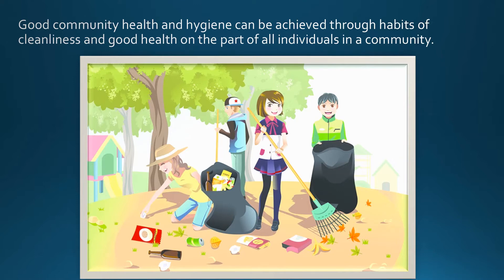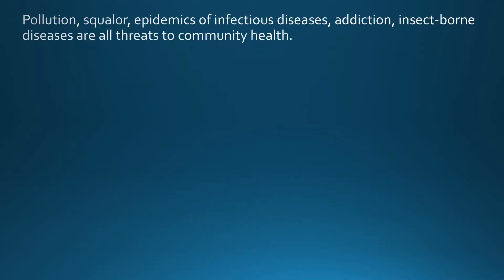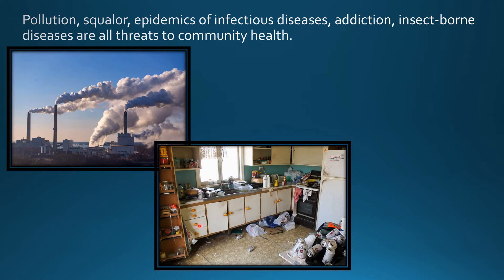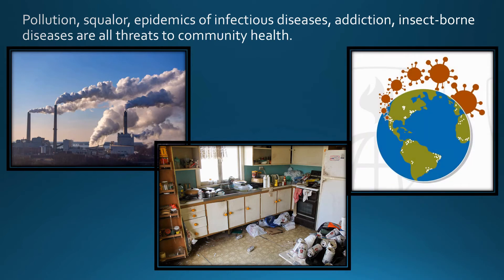People should get together to keep their community and area clean so that they can be away from disease. Pollution, epidemics of infection, addiction, and insect-borne diseases are threats to the community. There are various types of pollution like air, water, and soil pollution. Squalor is untidiness or having a very dirty home, so you should keep yourself clean and organize your home neatly. Epidemics are diseases that spread in certain areas and we should stop them from spreading further. To nurture community health is to protect the general public from such diseases and make a happy and healthy life possible.